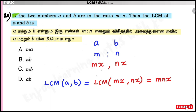Since mx = A, we have x = A/m. Substituting back, LCM = mnx. The LCM of the two numbers is mnx. Option C: mnx is the correct answer. LCM is nx.